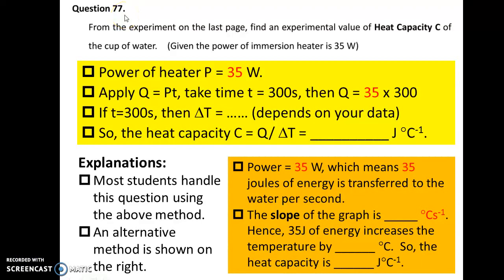Question 77. You have to find the heat capacity of your cup of water. The power of the heater is 35 watts. First, find the energy transferred to the water in 300 seconds. Then refer to your data to find the temperature rise in the corresponding period of time. Lastly, apply the formula C equals Q over delta T to find the heat capacity of your cup of water.